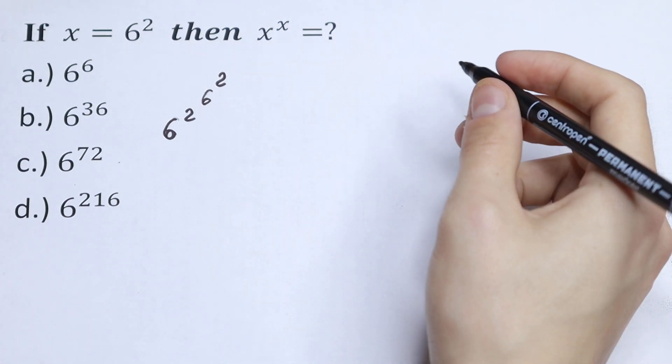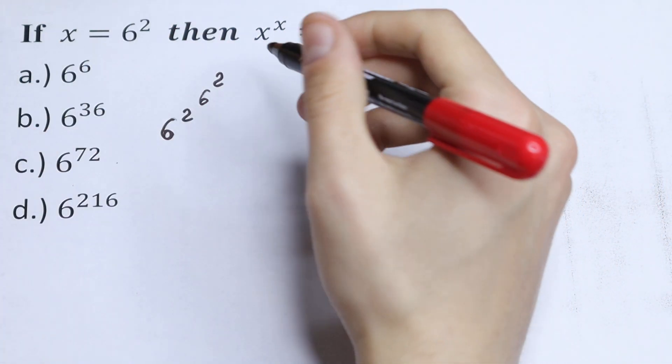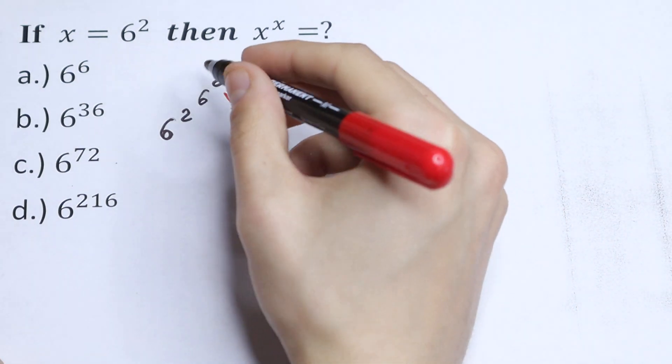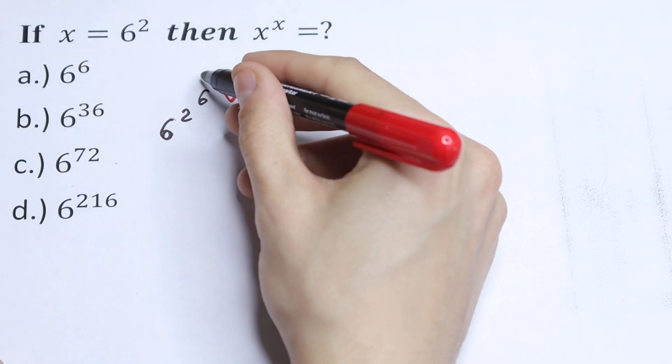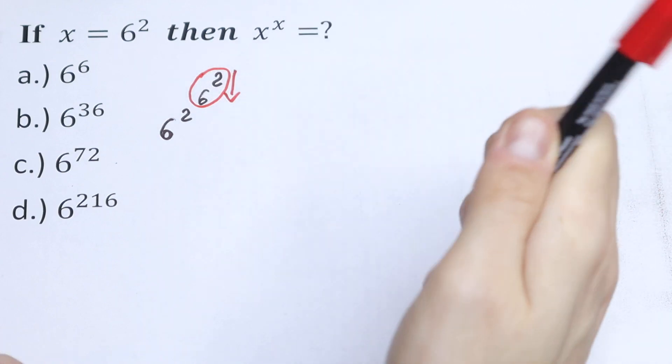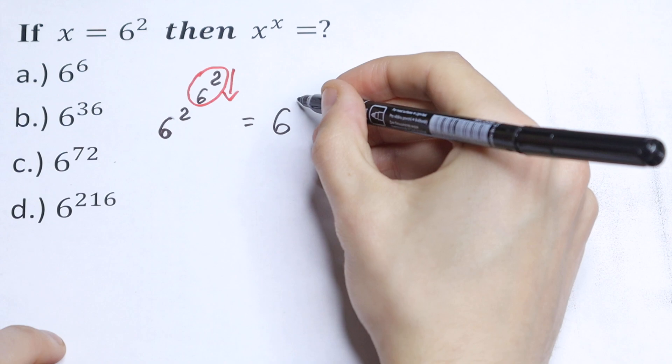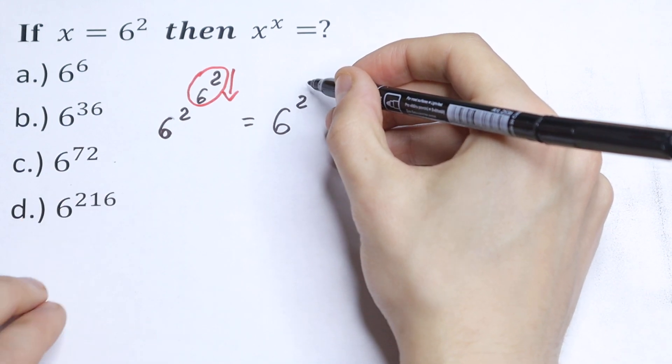How can I simplify this? First of all we need to know that we need to raise to the power from the top to the bottom. So first we need to raise this 6 to the second power. So it will be equal to 6 to the power 2 and to the power 6 squared 36.